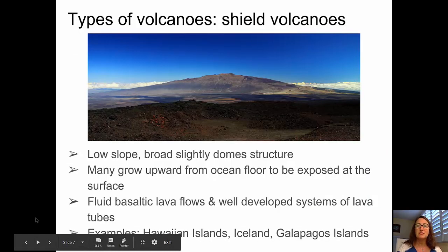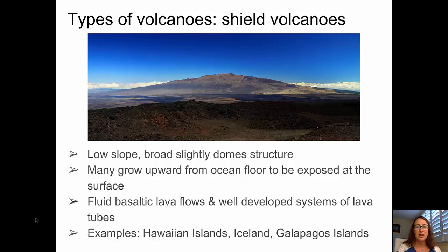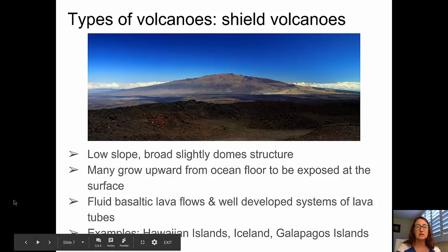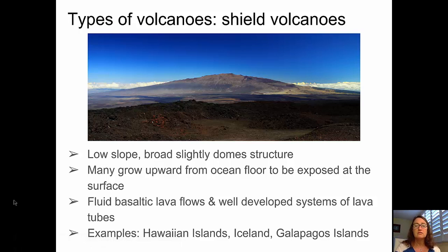Moving on to the types of volcanoes — the first type being a shield volcano. These are the largest of the volcanoes, characterized by broad, low dome-shaped structures with low slopes. Many of these grow upward from the ocean floor to be exposed at the surface, reaching tens of thousands of feet in height. They are composed of fluid basaltic lava flows that spread out in all directions and have well-developed systems of lava tubes. Great examples of shield volcanoes include the Hawaiian Islands, Iceland, and the Galapagos.